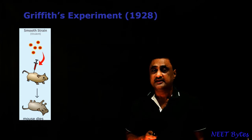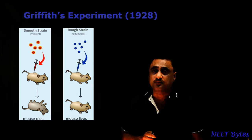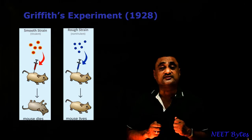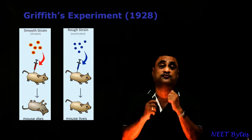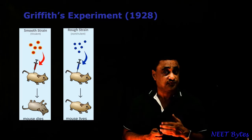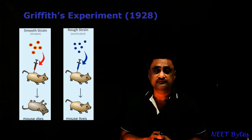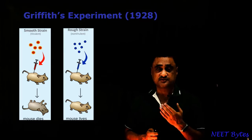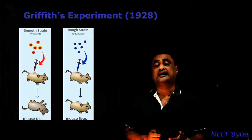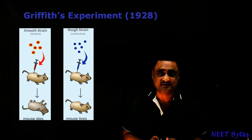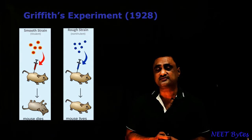In the second step, he injected the rough form. When the rough form was injected, the mouse survived. So he proved again that the rough form is non-virulent — it doesn't cause any disease.